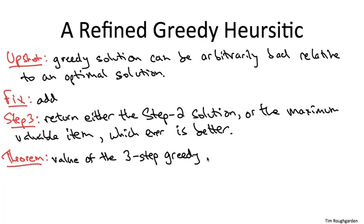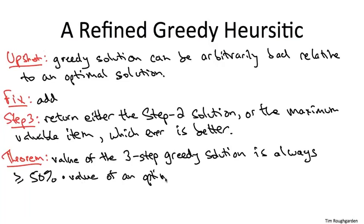Precisely, the value of the solution computed by this three-step greedy algorithm is always at least 50% of the value of an optimal solution. So the jargon for this kind of algorithm is a one-half approximation algorithm. For every instance, it's guaranteed to compute a solution with value at least one-half that of an optimal solution. Also, as you would hope from a greedy heuristic, it runs extremely quickly. Basically, all we do is sort the items, so the running time is O of N log N.